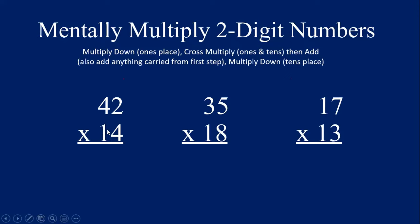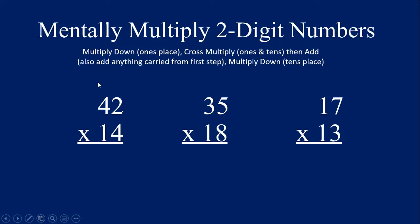Let's try 42 times 14. We're going to do these in our head — it's a little more challenging holding numbers in your head, but let's see. First: multiply down — 2 times 4 is 8, so 8 is the answer in the ones place. Cross multiply: 2 times 1 is 2, and 4 times 4 is 16. Add 16 plus 2 and get 18 — leave the 8 and carry a 1. Multiply down: 4 times 1 is 4, plus the 1 we carried gives us 5. So the answer is 5, 8, 8 — 588 is the correct answer to 42 times 14. Go ahead and do it on paper if you need to, but work towards solving these in your head.